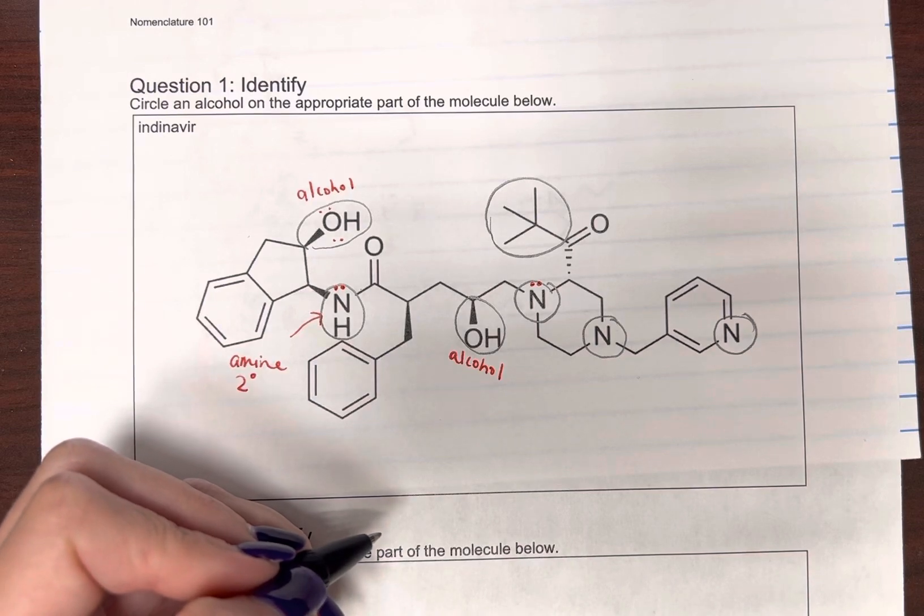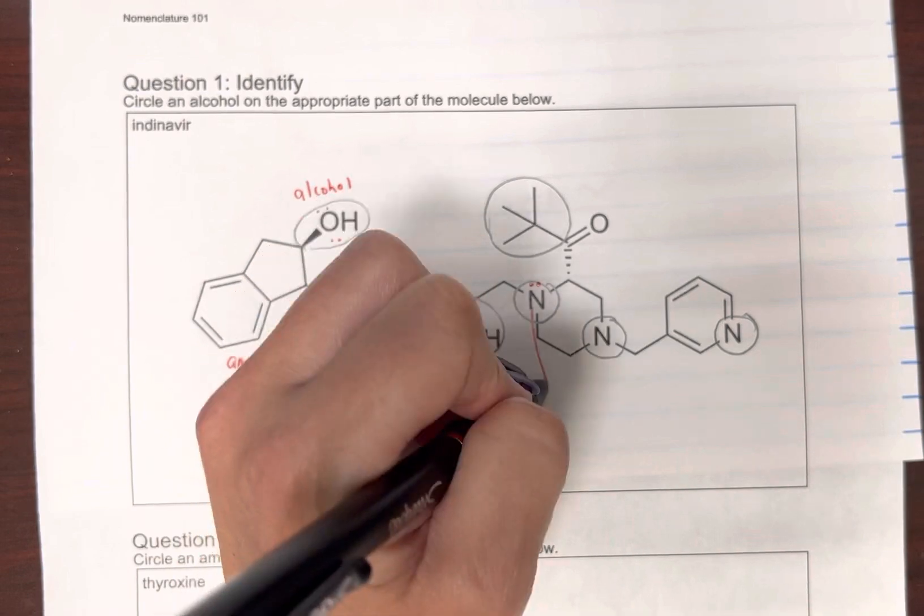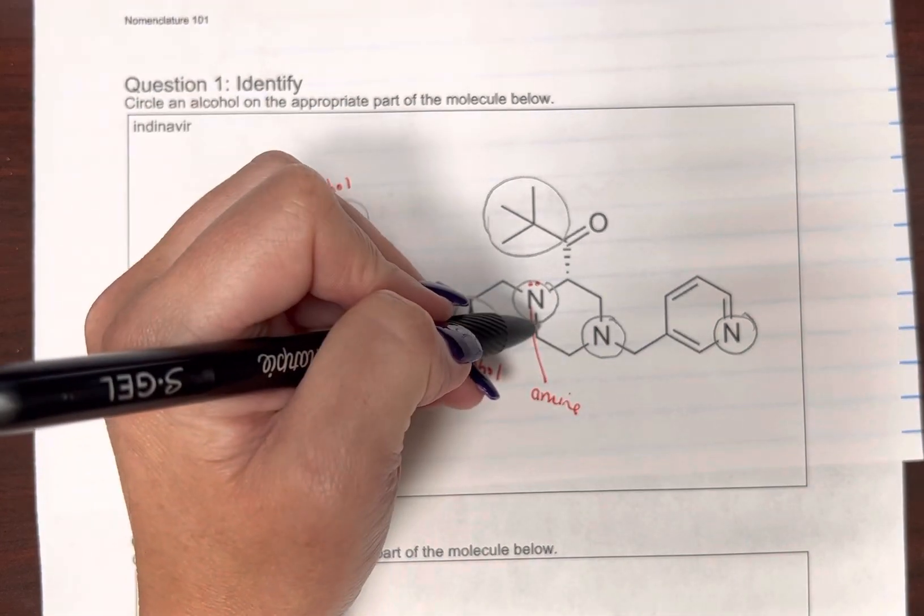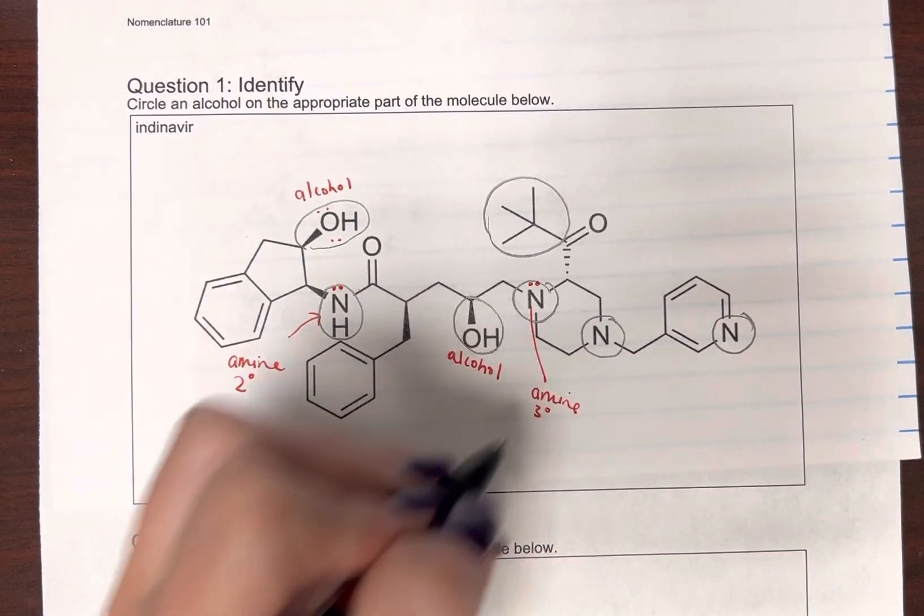Drawing the lone pair. I know this should be drawn in already, but hey. Okay, so this is an amine, and it has one, two, three connections that are not hydrogen. So it's a tertiary amine.